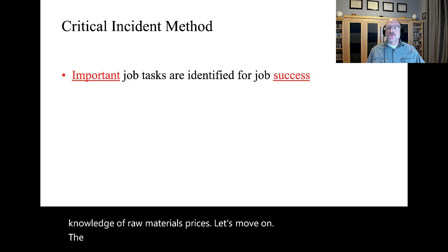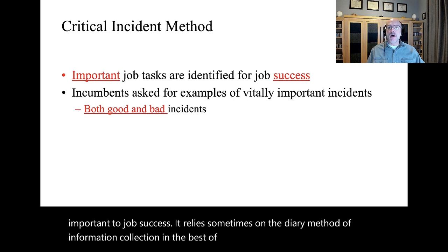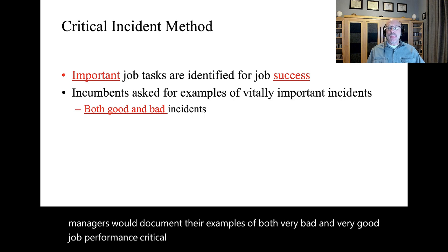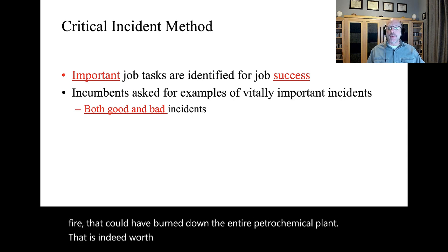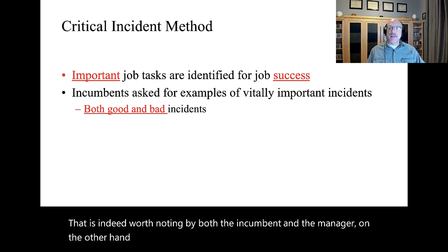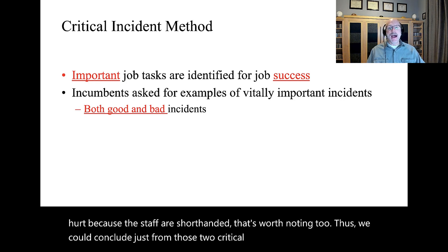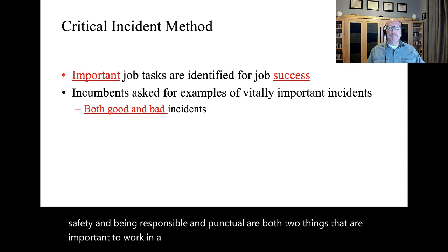The Critical Incident Method tries to document the tasks that are more important to job success. It relies sometimes on the diary method of information collection. In the best of all worlds, job incumbents and managers would document examples of both very bad and very good job performance—Critical Incidents. For example, if an incumbent puts out a fire that could have burned down the entire petrochemical plant, that is indeed worth noting. On the other hand, if the employee is late to work one time and someone gets hurt because the staff are shorthanded, that's worth noting too. Thus, we could conclude from those two critical incidents that having an eye for safety and being responsible and punctual are both important to work in a petrochemical refinery.